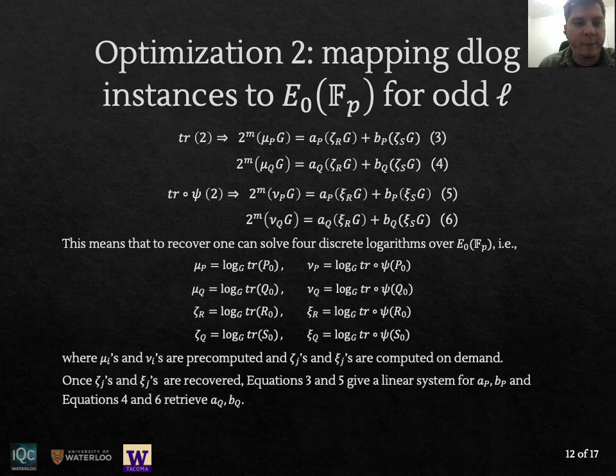And for example, the first four discrete logarithms only involve public points, so they can be precomputed. So basically the last four need to be computed on demand. And these are all over the base field. And once you have computed and recovered these ζ's, you can basically solve a linear system of equations over the integers mod ℓ^e.